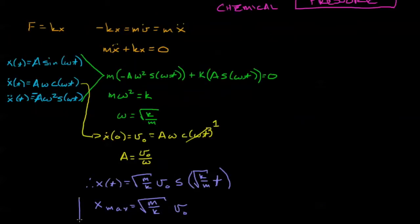So welcome back. If you tried it on your own, hopefully you came up with this solution here, where the maximum position was square root of m over k times v0. And you can see that what we've done is we've set up our differential equation. We assumed a solution of A sine omega t, a sinusoidal function.